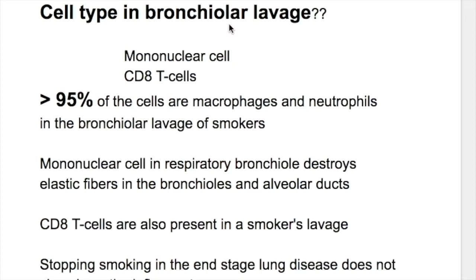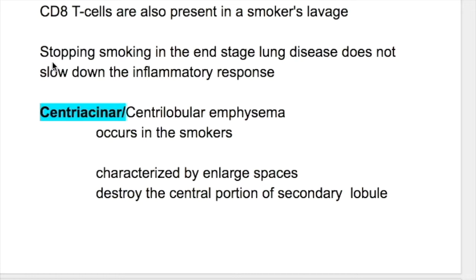What are the cell types in bronchial lavage? Mononuclear cells and CD8 cells. More than 95 percent of the cells are macrophages and neutrophils in the bronchial lavage of the smoker. Mononuclear cells destroy elastic fibers in the bronchioles and alveolar ducts. CD8 cells are also present in a smoker's lavage. An important point is that stopping smoking in end-stage lung disease does not slow down the inflammatory response.